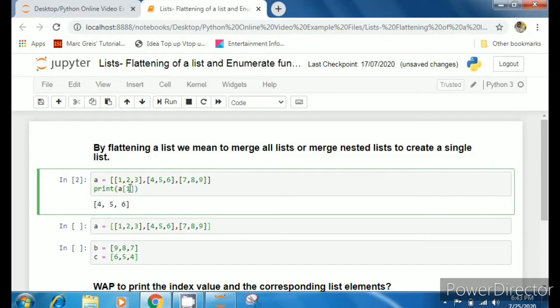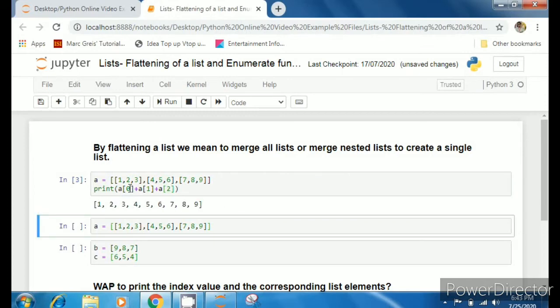To flatten or to create a single list by merging, I'll use concatenate or plus operator and I'll write all the nested index values: a[0] plus a[1] plus a[2]. See here, it has created a single list.